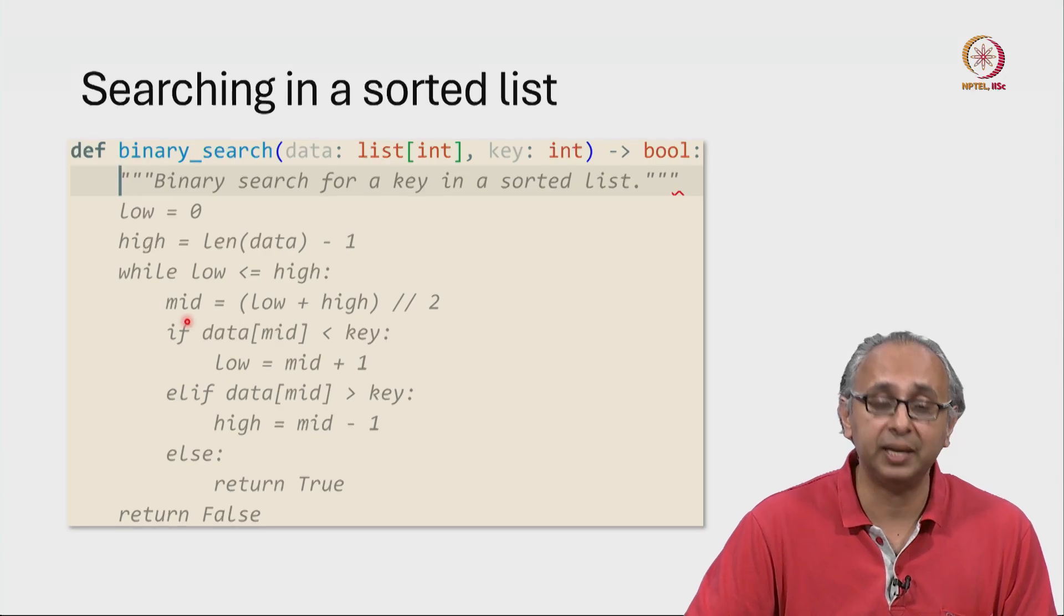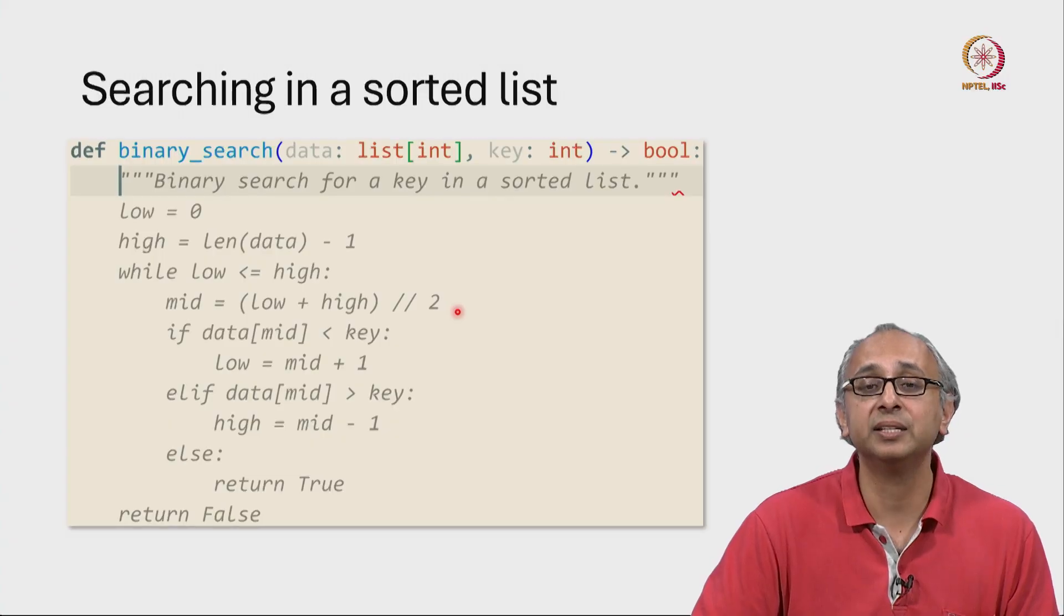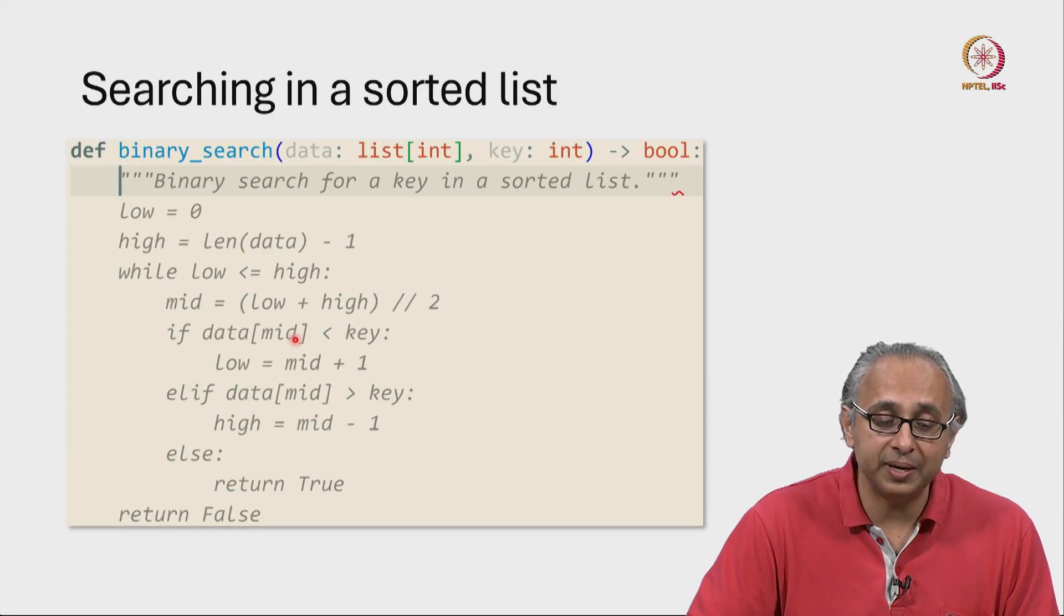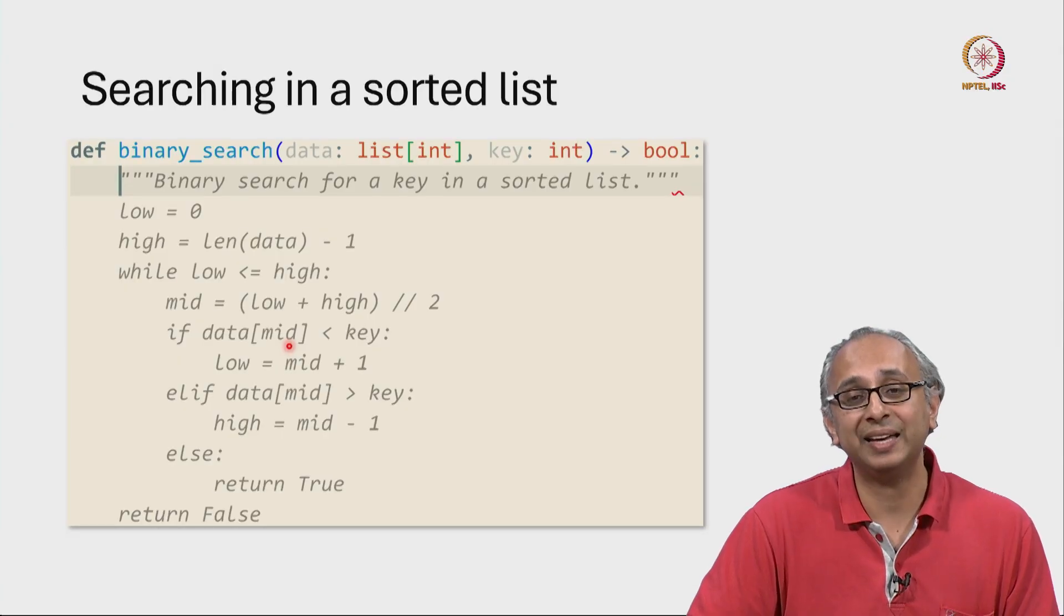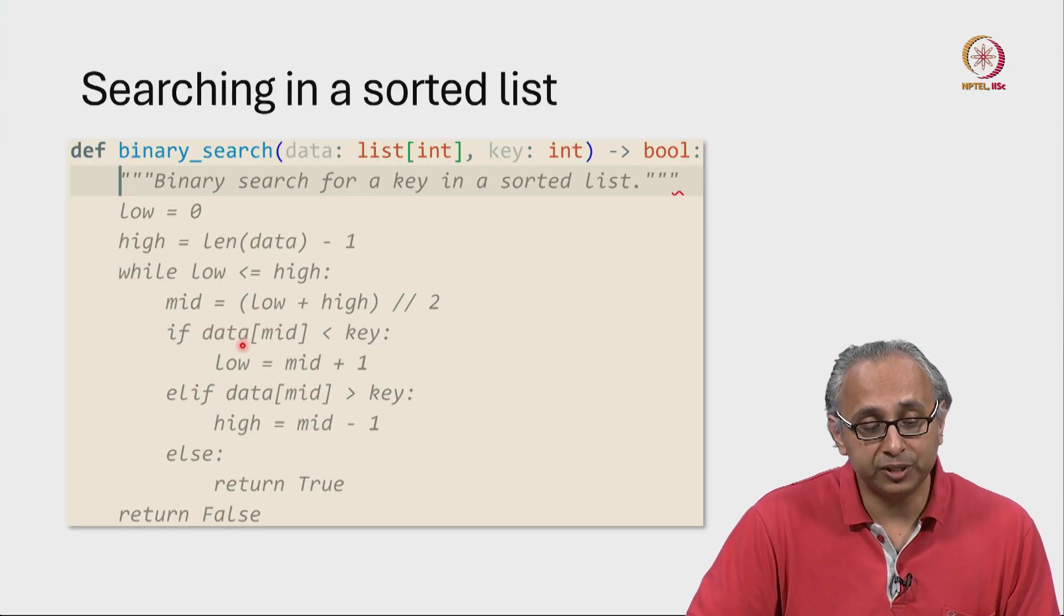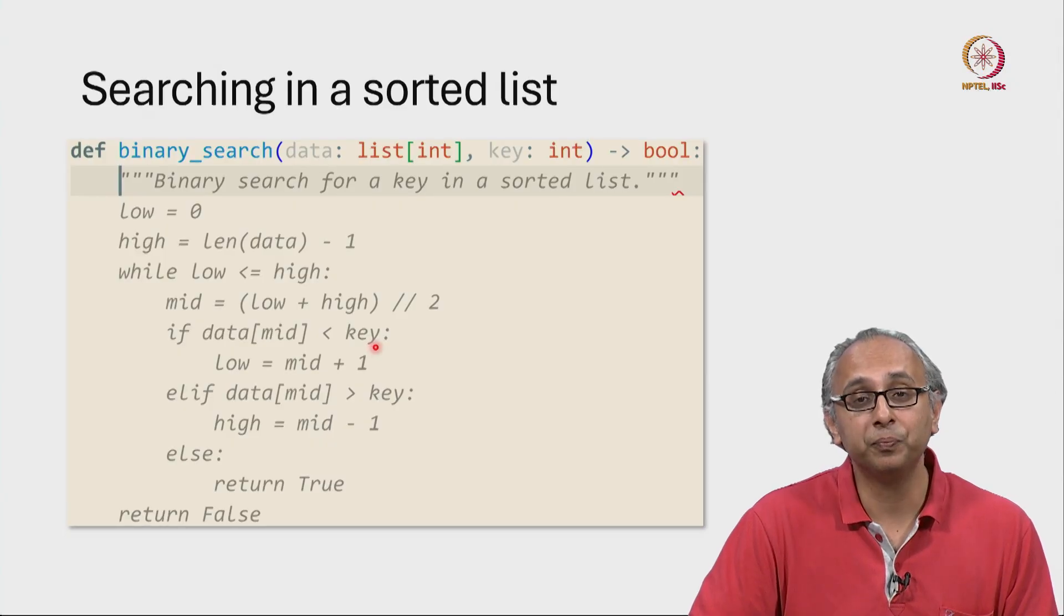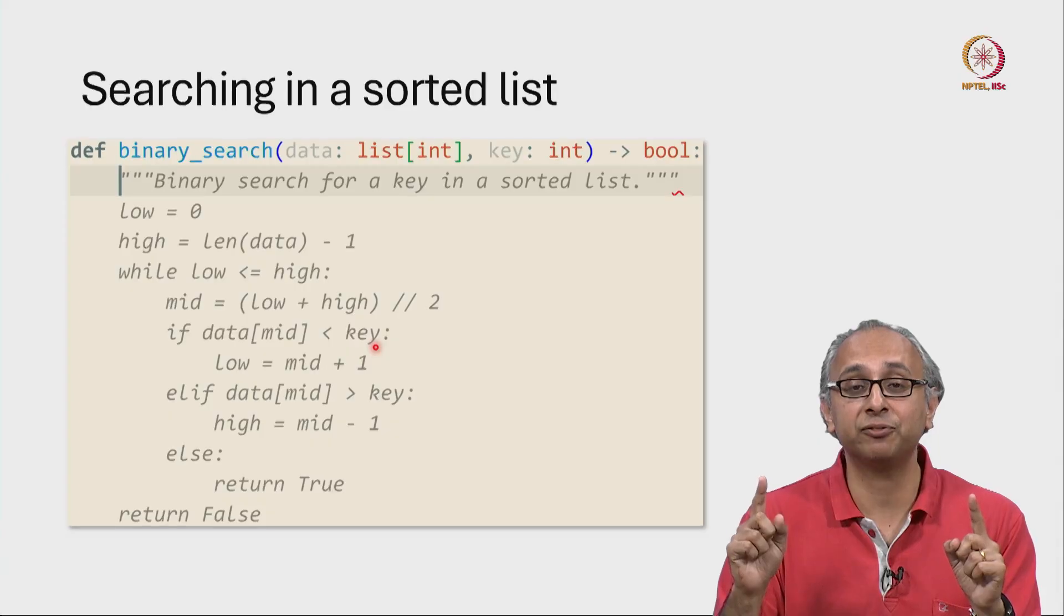We are going to calculate the middle point of that region. We are going to calculate this index, low plus high divided by 2. Now we are going to examine the item at that index. If data of mid is smaller than what we are looking for, then there is no point looking more to the left.